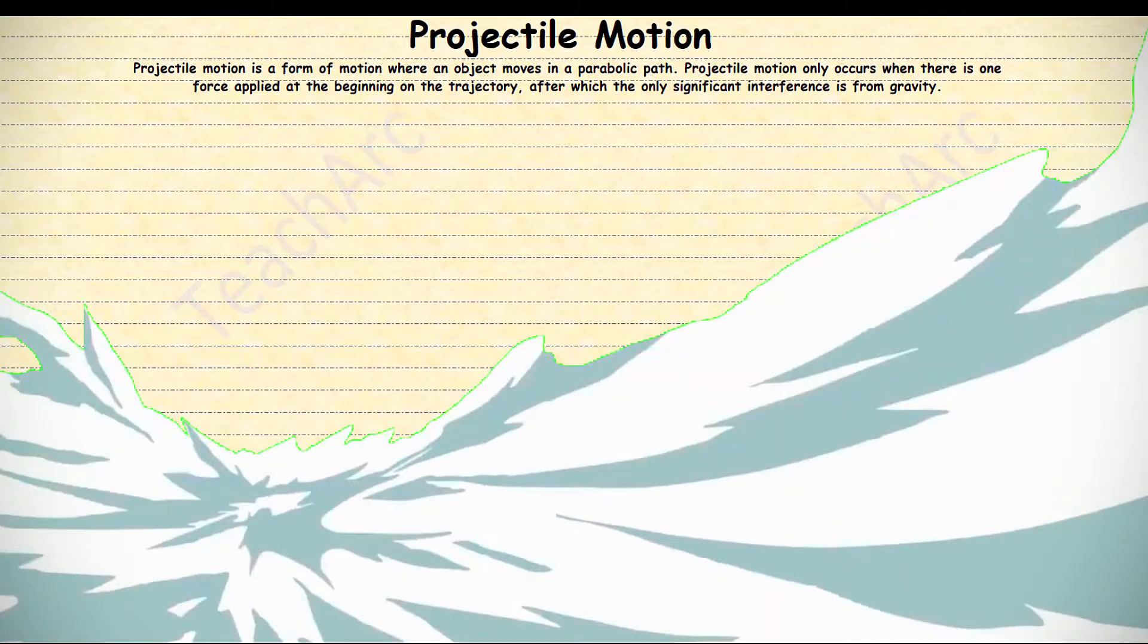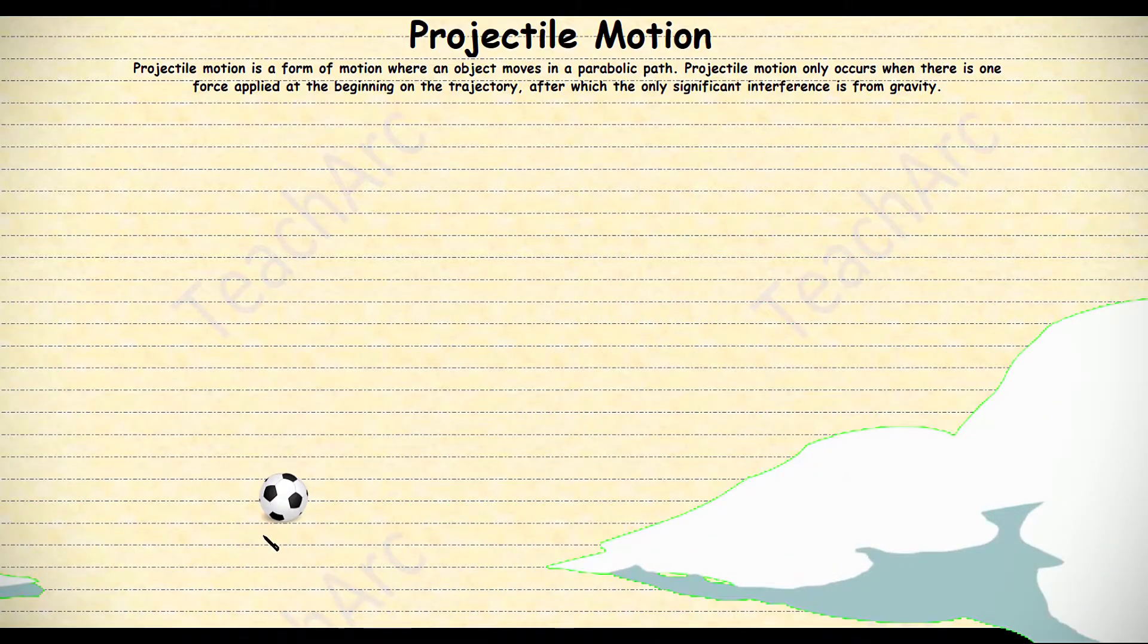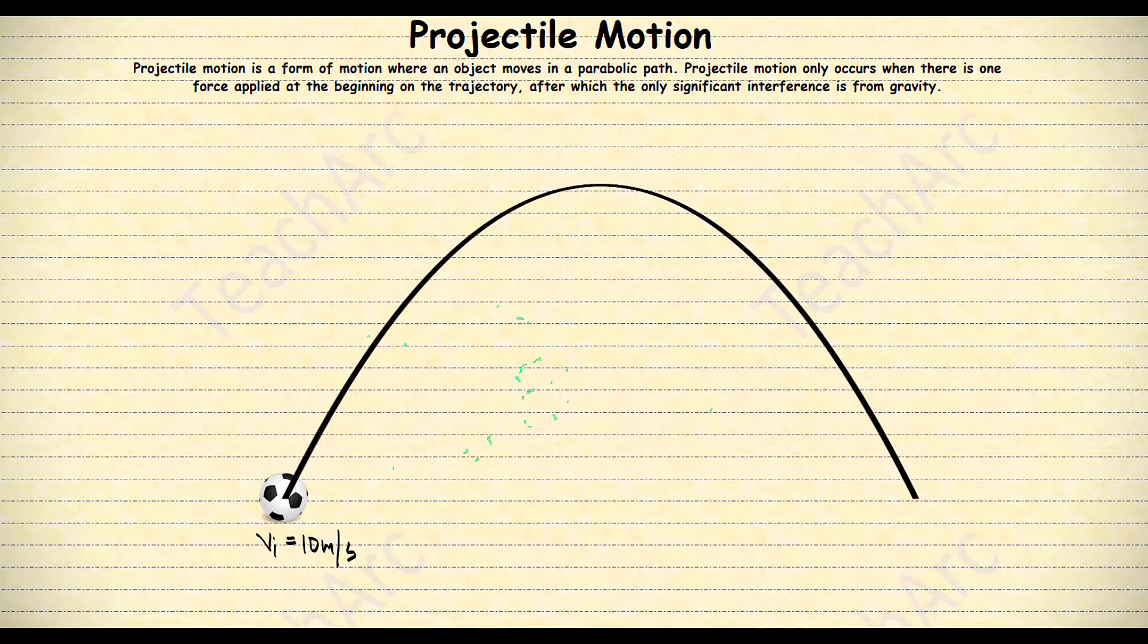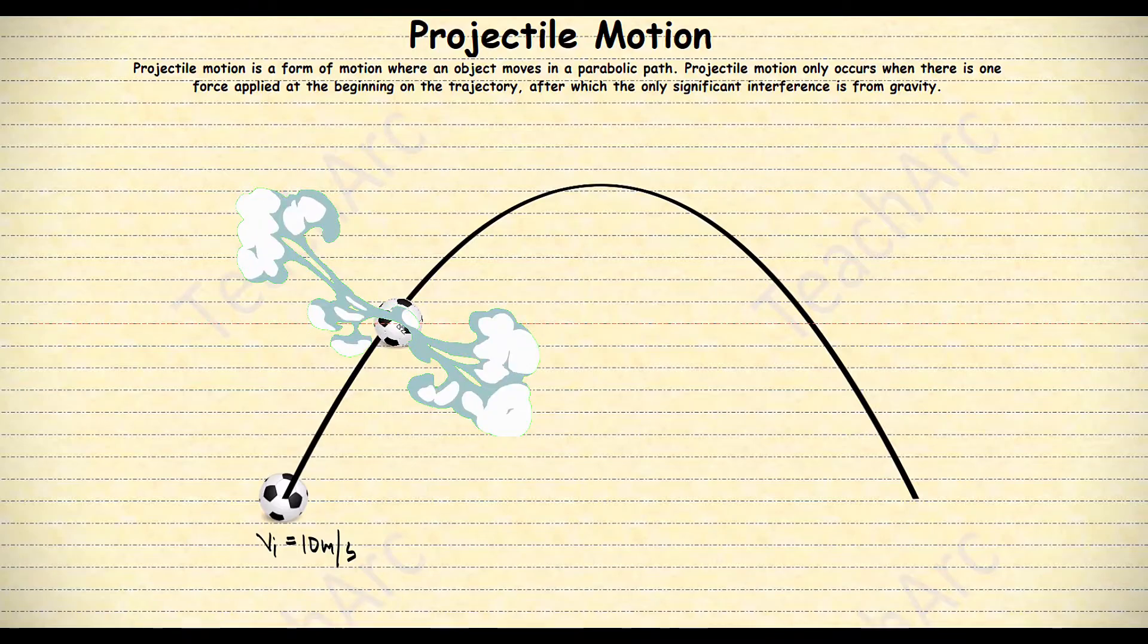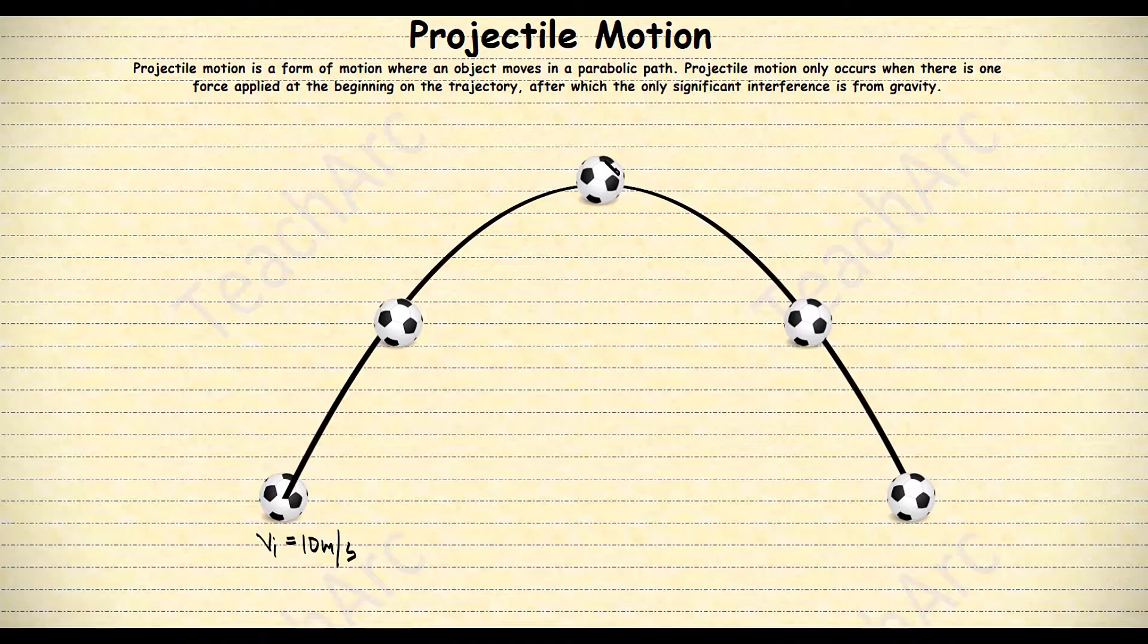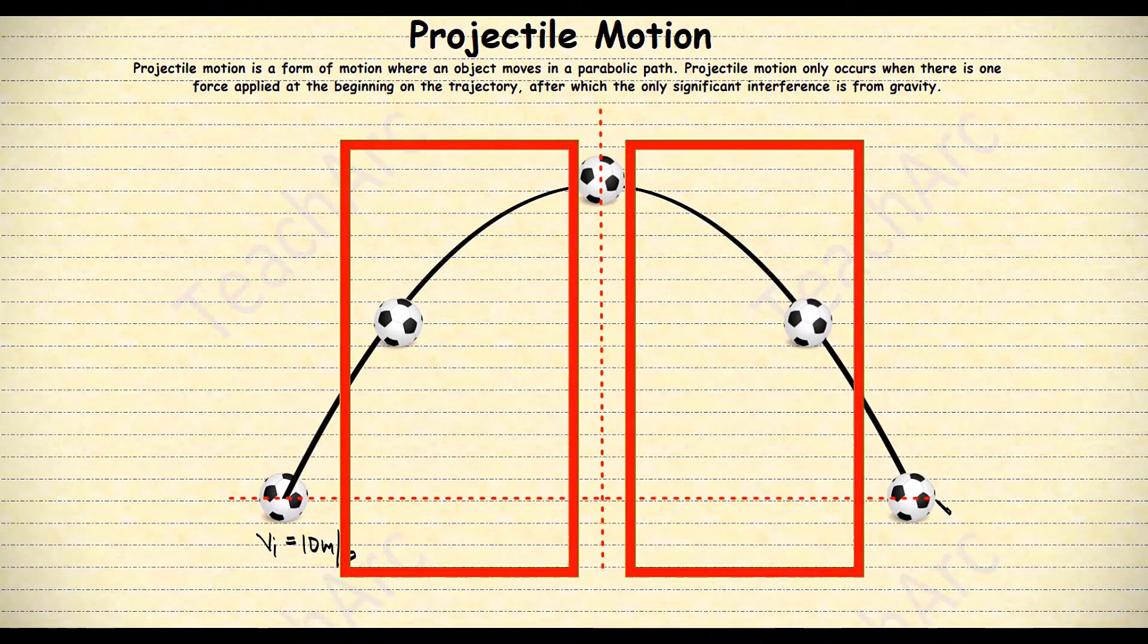Let's look at the motion of this ball if at the beginning it has an initial velocity of 10 meters per second. Let's look at its motion at specific points of its trajectory. Take note that we have a symmetrical parabolic path.